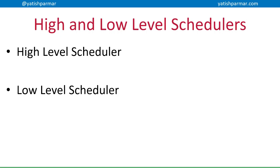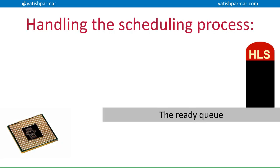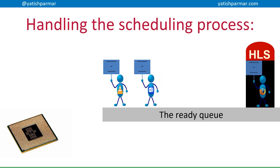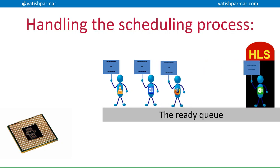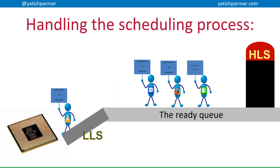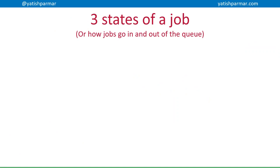There are actually three different kinds of scheduler, but we'll start with two. The high-level scheduler is involved with getting jobs into the ready queue — it gets them ready so they can be processed. The low-level scheduler then takes jobs out of the ready queue and loads them into the CPU for processing. So there are three states of a job we need to think about.